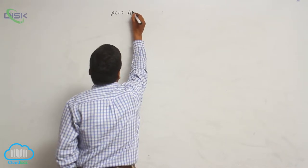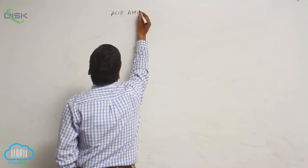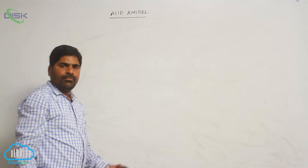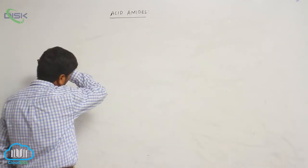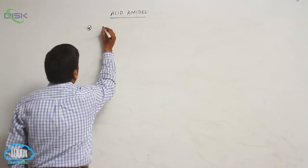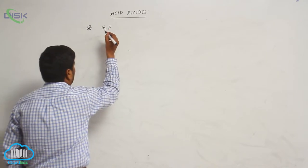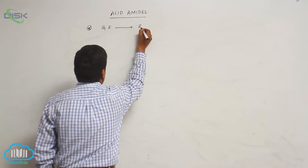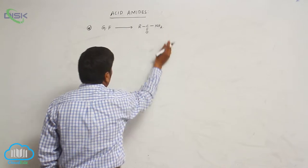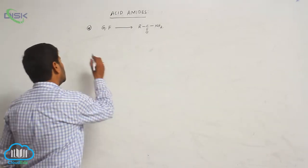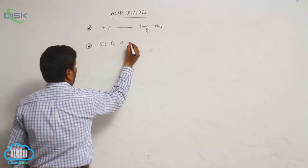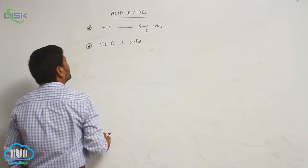The last one is acid amides. The general functional group formula of acid amide is R-C double bond O-NH2. It is an acid derivative.